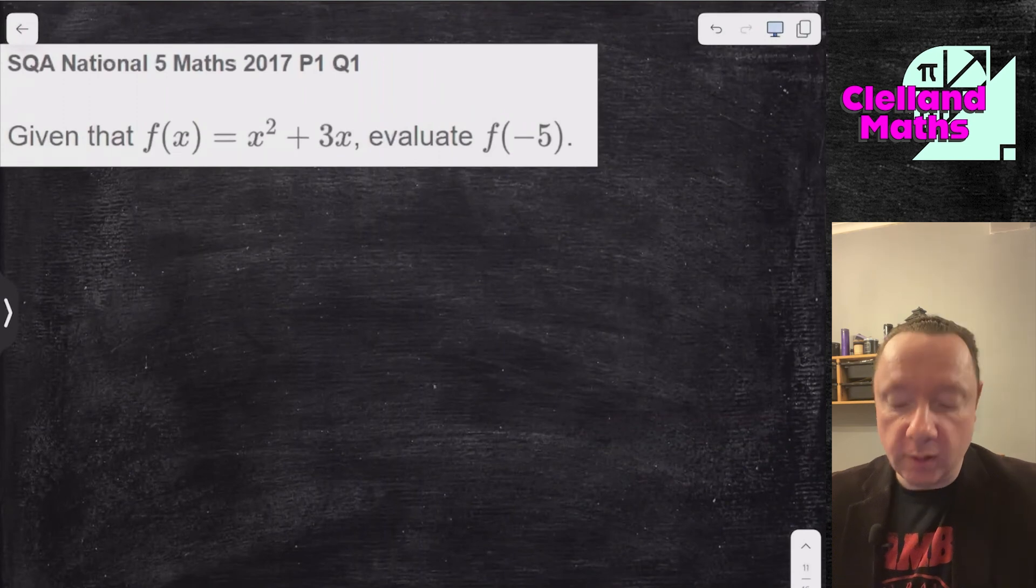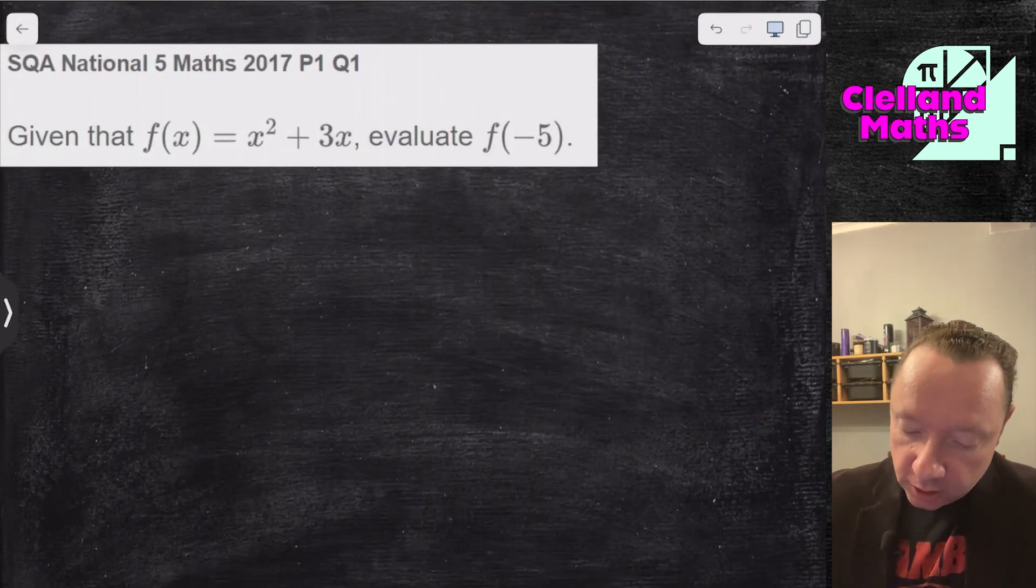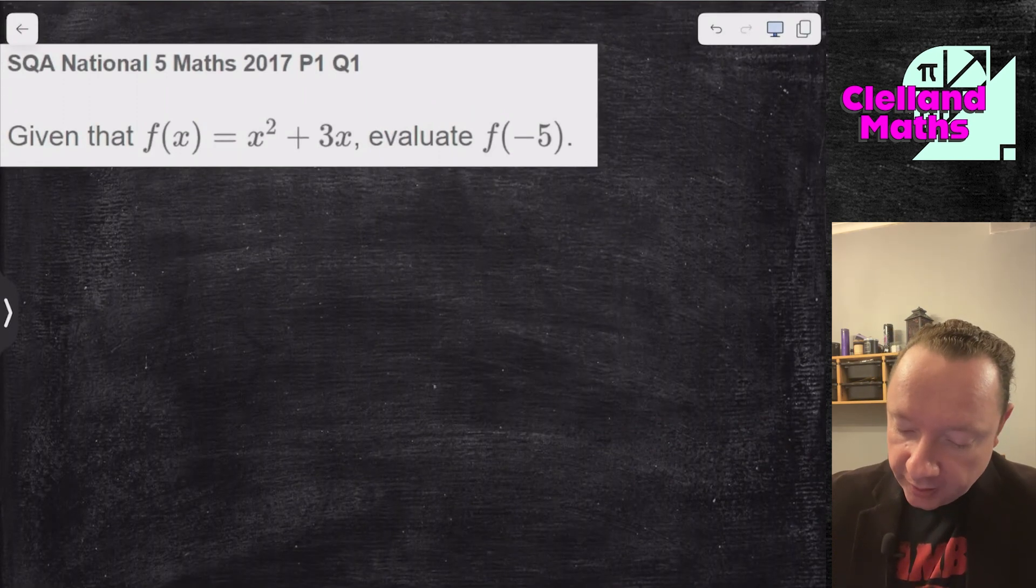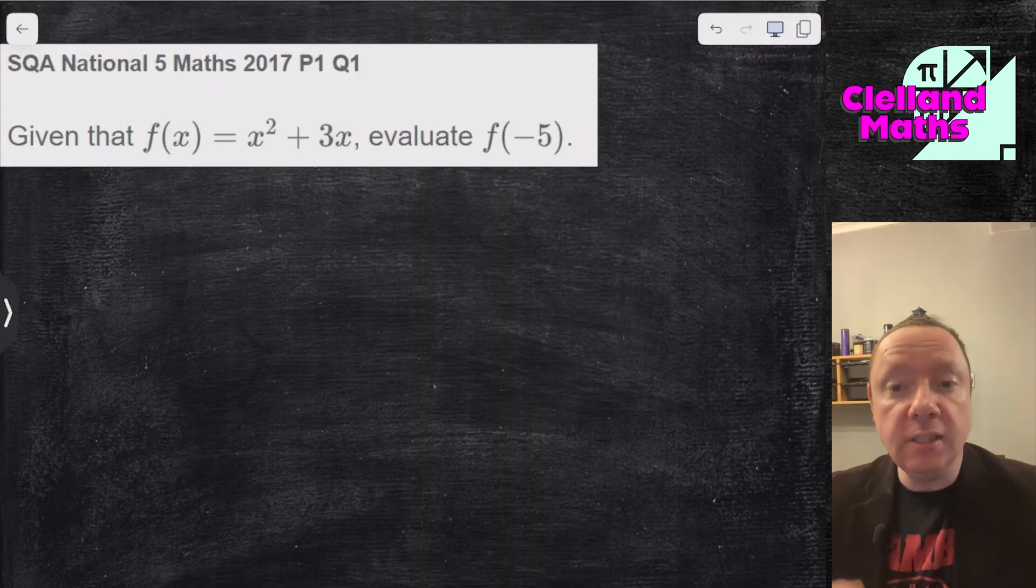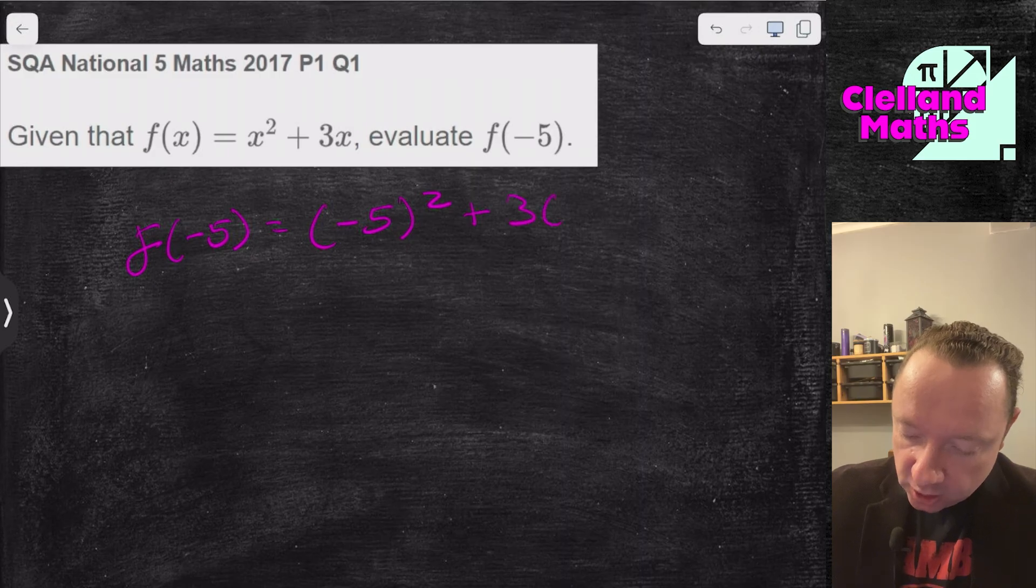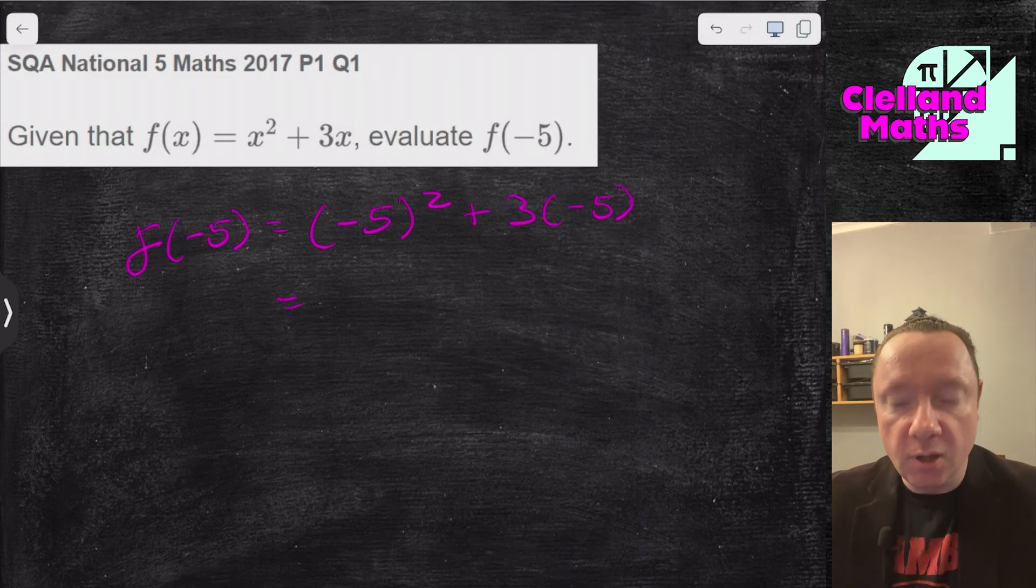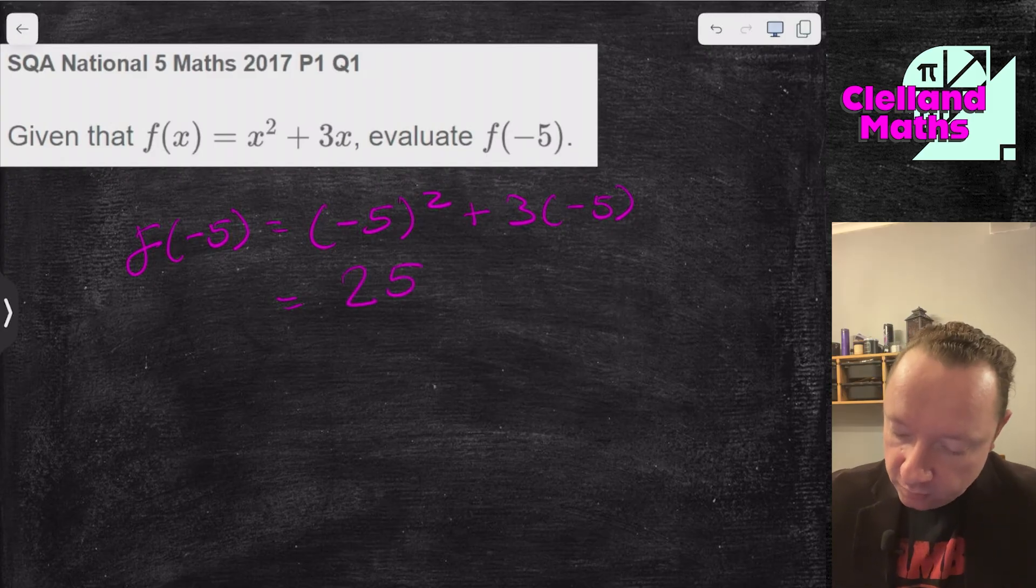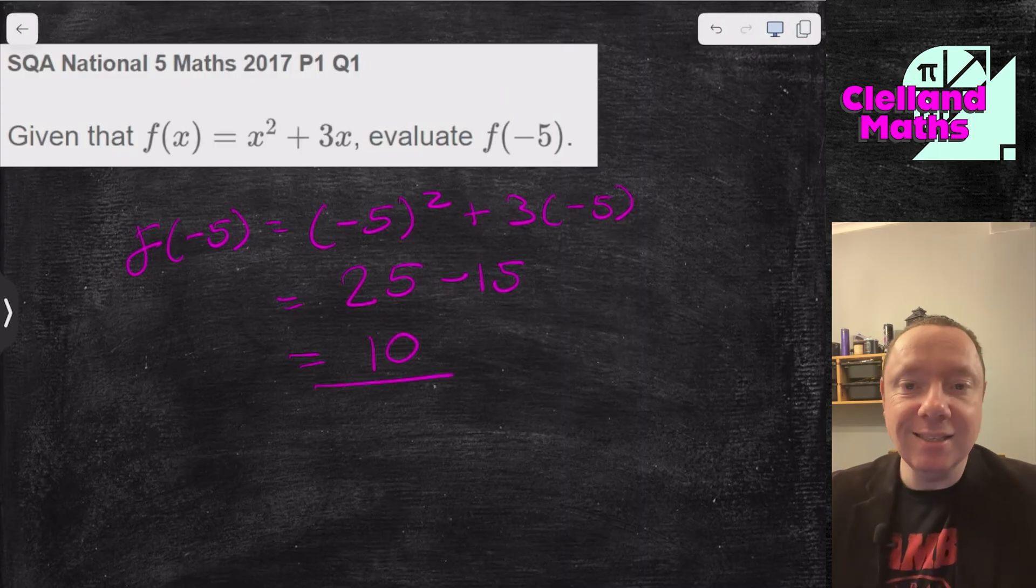SQA National 5 Maths 2017 Paper 1 Question 1. Function f of x is x squared plus 3x. Evaluate f of minus 5. So it doesn't say equals minus 5. It says x is minus 5. So I write f of minus 5. Minus 5 squared, minus times a minus is a plus, 25. 3 times minus 5 is minus 15. So I get 10. And we're done there.